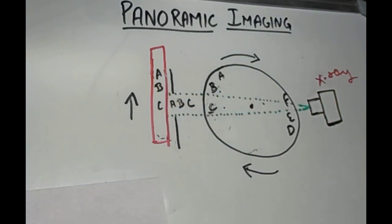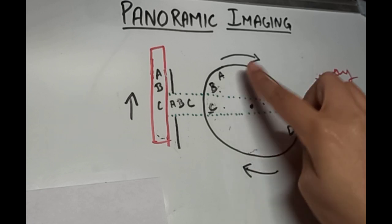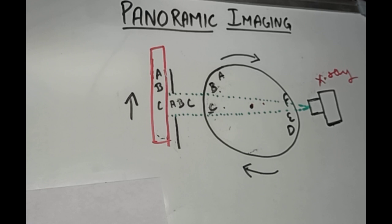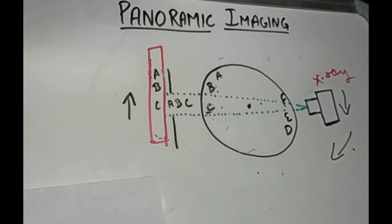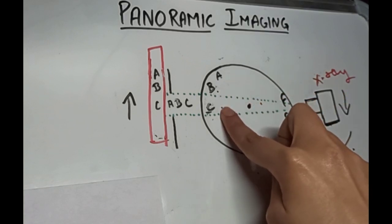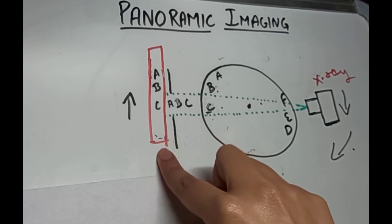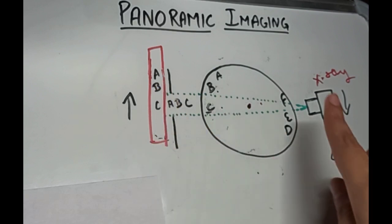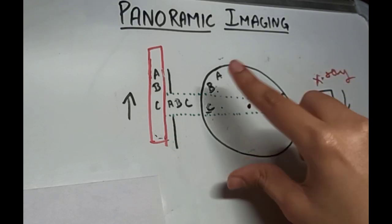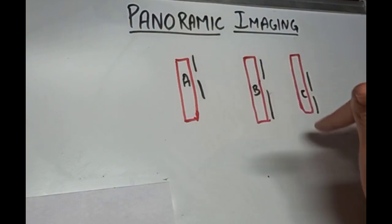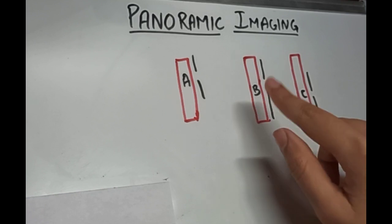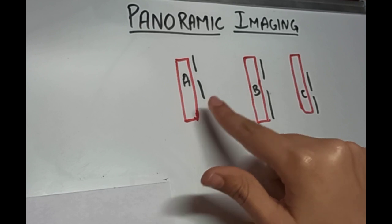When imaging a patient we cannot ask the patient to move, so we move the x-ray source instead. To receive the image on the receptor as the x-ray passes through objects A, B, and C, we also move the image receptor. So the x-ray source, the receptor, and the collimator all rotate around the patient. You can see how the receptor moves past the collimator during their motion around the patient.